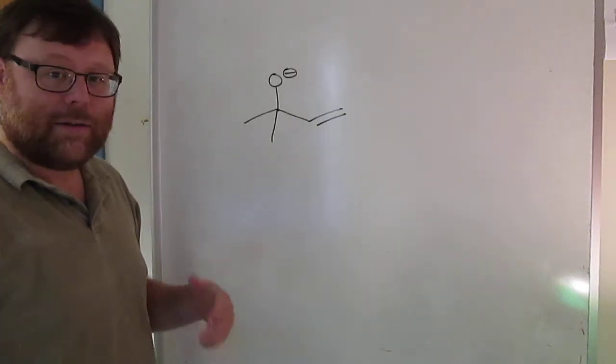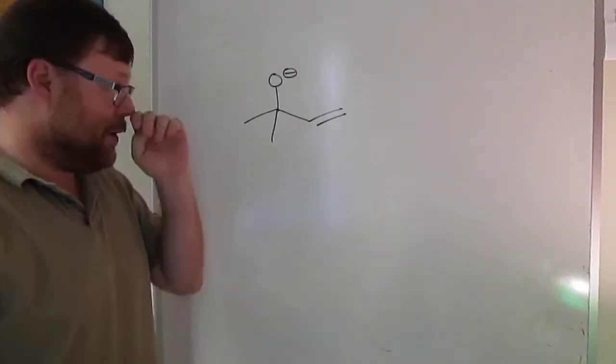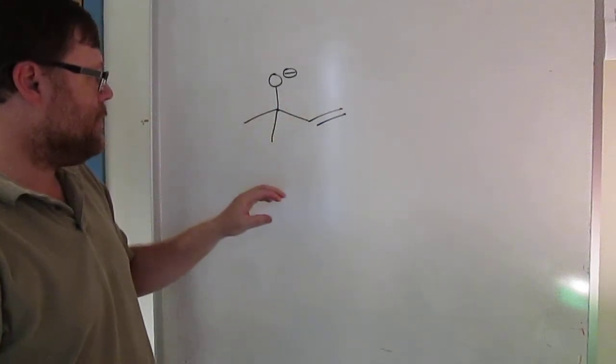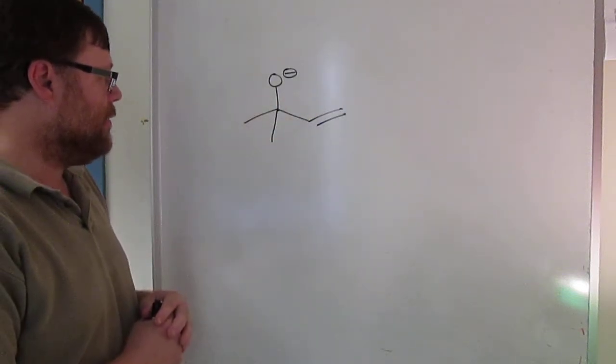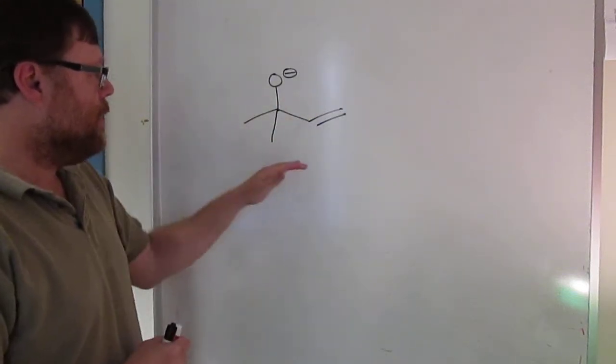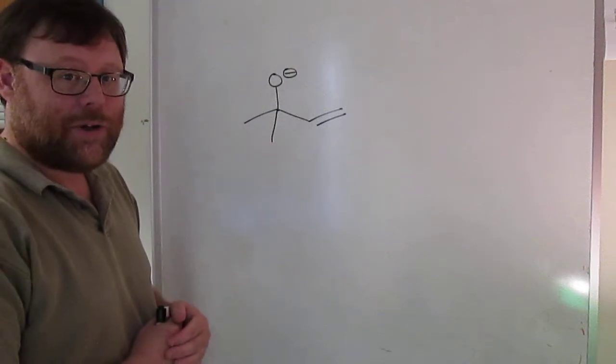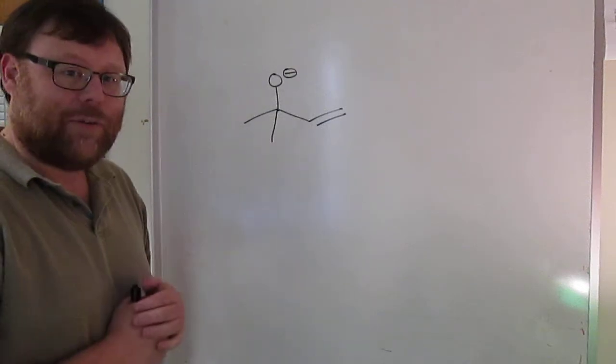Alright, here's an alkoxide ion, so an ion where it's like hydroxide but you've got an alkyl group of some type bonded to the oxygen instead of an H. So figure out if there are any lone pairs that are not shown and see if you can draw a resonance form for this molecule.